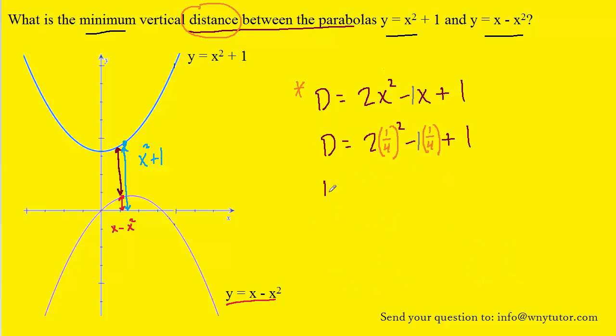And when you plug in 1 fourth into the distance formula, you should get a value of 7 eighths. Or if you prefer the decimal version of the answer, it would be 0.875. So either answer would give the minimum distance between the two parabolas.